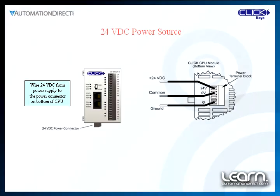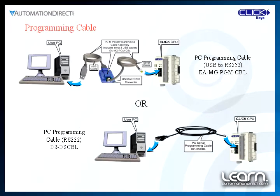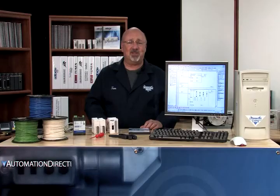The 24 volt DC is wired to the removable terminal block located on the bottom of the CPU as shown here. Depending on the type of communications port available on the PC you are using, you will need to choose a programming cable to connect between port 1 on the Qlik CPU and the available port on the PC.